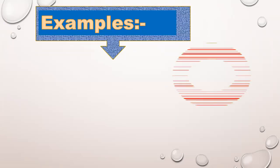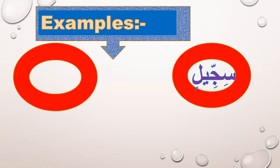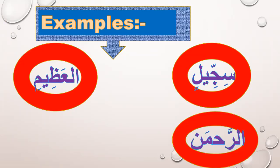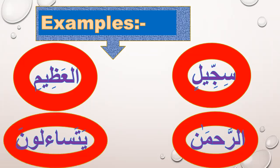Examples: The last letter in the word is lam. But because we stop, it will be Madd Arid l-Sukun — Sijil. Al-Azim. Al-Rahman. Yatasa'aloon.